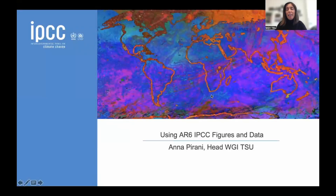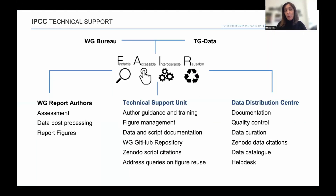Hello, I'm Anna Pirani, the head of the Working Group 1 Technical Support Unit. Following on from Martina's talk, I'll be describing the role of the TSU and aspects related to data in the reports. The TSU is the team that supports the authors' work in undertaking the assessments. We are overseen by the Working Group Bureau, and we're advised by TG Data on data aspects. The report authors produce figures to illustrate the assessments. To give you an idea of the scale of this effort, there are about 650 figures as part of the AR6 Working Group 1 report.